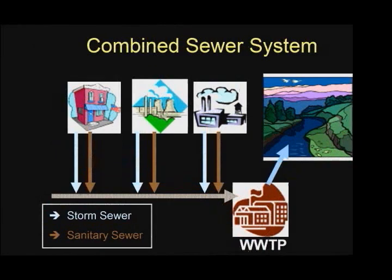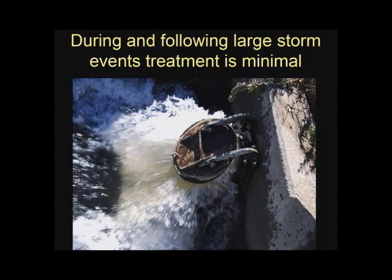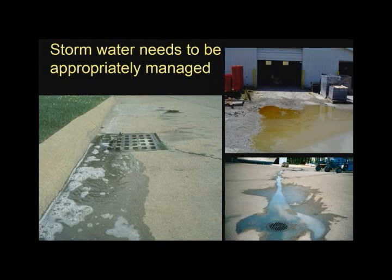Permit coverage is needed when stormwater is discharged to a separate storm sewer system. In a combined sewer system, stormwater is combined with sanitary sewage and is directed to the local wastewater treatment plant. If all stormwater from the facility is discharged to the combined sewer system, stormwater permit coverage is not needed. However, after large storm events or during heavy snowmelts, the volume of water entering the combined sewer system can be too much for the wastewater treatment plant to effectively treat. Nutrients and chemicals dissolved in the stormwater runoff and smaller sediment particles will not be removed, so stormwater runoff needs to be appropriately managed at the facility to reduce the impact on surface waters.